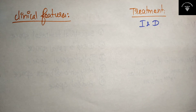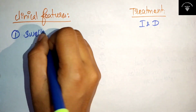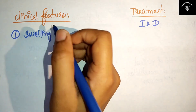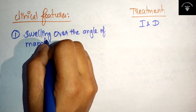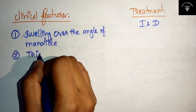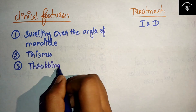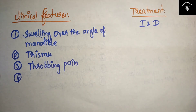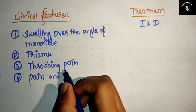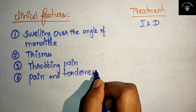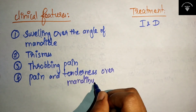Let's see the clinical features of submasseteric space infection. There will be swelling over the angle of mandible. And you will have trismus. There will be throbbing pain. And next, there will be pain and tenderness over the mandibular ramus.